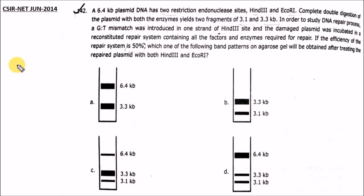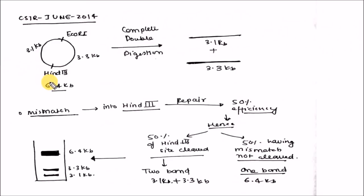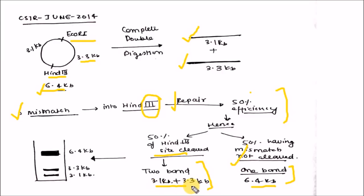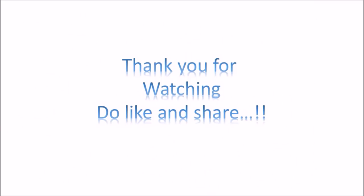This question came in CSIR NET JRF June 2014 and involves restriction mapping of a 6.4 kb plasmid. The plasmid has EcoRI and HindIII restriction sites. After complete digestion, two fragments of 3.1 kb and 3.3 kb are generated. When a mismatch is inserted at the HindIII site and a repair mechanism operates at 50% efficiency, 50% is repaired and cleaved by HindIII giving 3.1 and 3.3 kb bands, while 50% is not repaired and remains as a 6.4 kb band. Thank you for watching; please like and share the video.